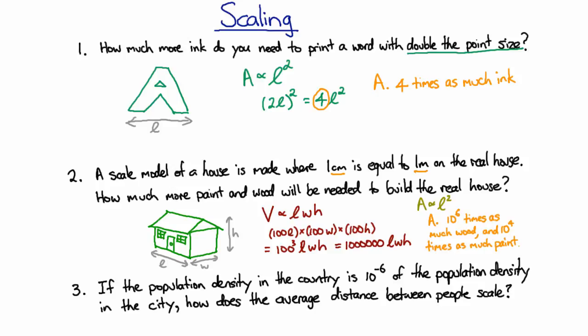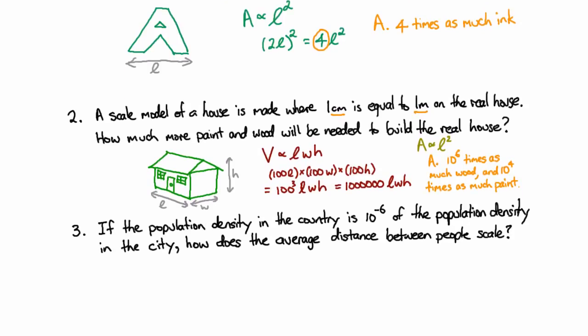So in this last question, we have to go from a population density in the country to an average distance between people. Now normally when you say density, you tend to mean a certain amount of something per unit volume. So I might talk about the density of water as being 1,000 kilograms per cubic meter. But that would be a very unusual choice to talk about a population density, because then you'd have to worry about how high people were stacked. Normally when you talk about a population density, you're talking about the number of people in the country. And so you tend to talk about the number of people for a given unit of area. So it's people per unit area that describes your population density, not people per unit volume.